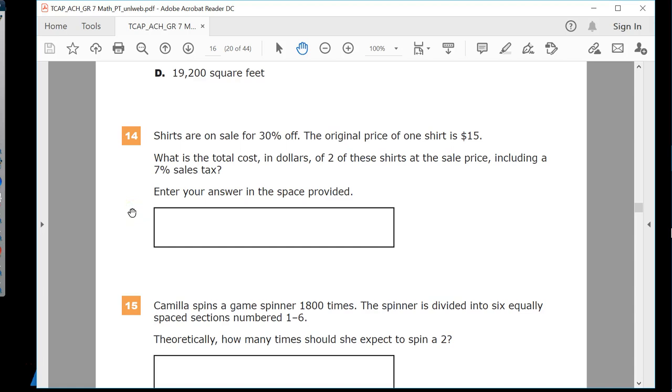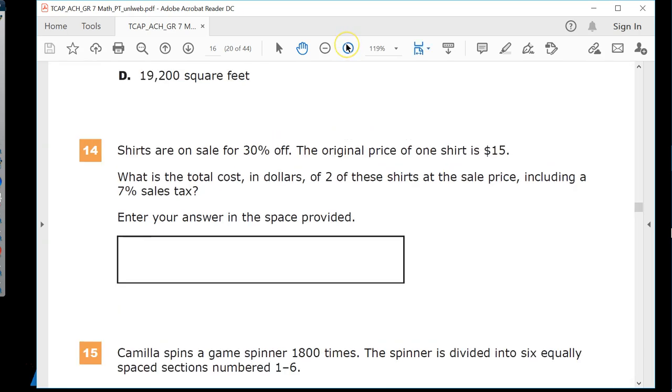This is the grade 7 math practice test for TN Ready. Currently, we're on question number 14. Shirts are on sale for 30% off. The original price of one shirt was $15. What is the total cost in dollars of two shirts at the sale price, including a 7% sales tax?